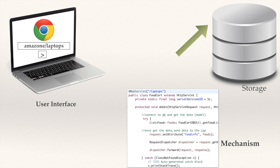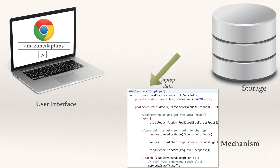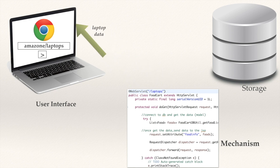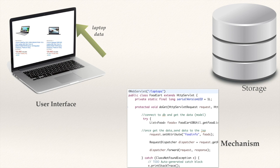The mechanism connects to the storage: 'Hey storage, my user wants to see the laptop data — can you provide that?' The storage has every kind of data — mobile data, laptop data, everything — but the mechanism is particularly interested in laptop data. So the storage fetches and loads the laptop data only and sends it to the mechanism. The mechanism then sends this data to the user interface, and the user interface processes this laptop data and displays all this data in a designed, structured, beautiful fashion.